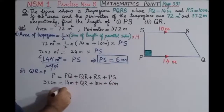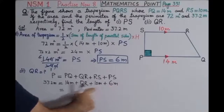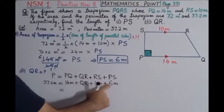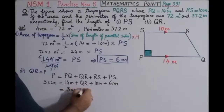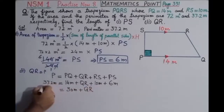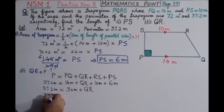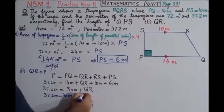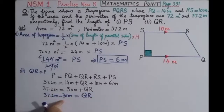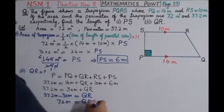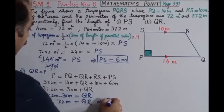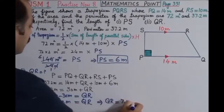Plus PS which is 6 meters. Adding 14 plus 10 plus 6 gives 30 meters. So we have 37.2 meters equals 30 meters plus QR. Subtracting 30 meters from 37.2 meters gives QR equals 7.2 meters.